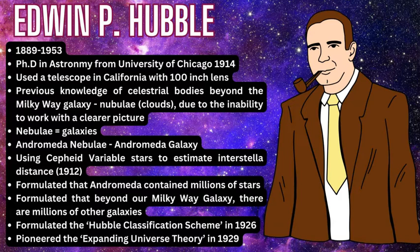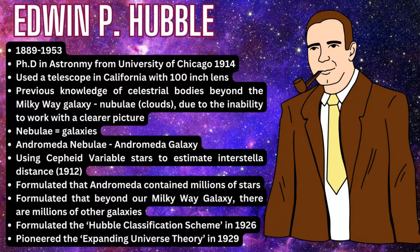These galaxies were all over the universe. Beyond that, he started to classify all the new galaxies seen through his telescope, since each galaxy had a certain shape or characteristic which could be classified into a scheme. This was done in 1926. Then three years later he started working on his expanding universe theory, a preamble to the Big Bang Theory, looking at red shift, light, and the movement of galaxies away from each other.